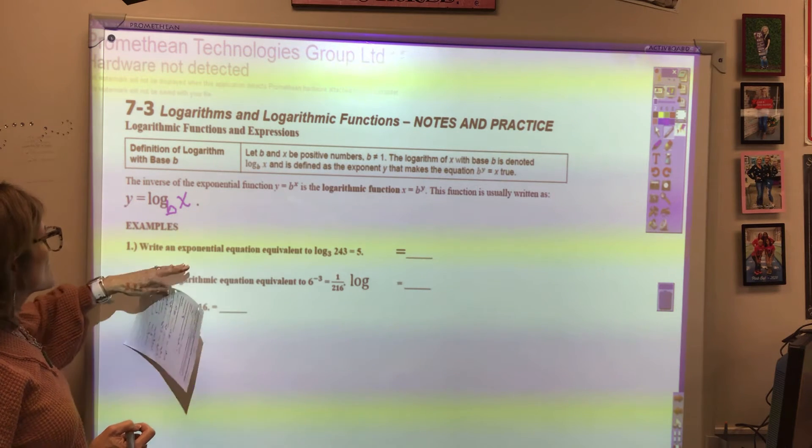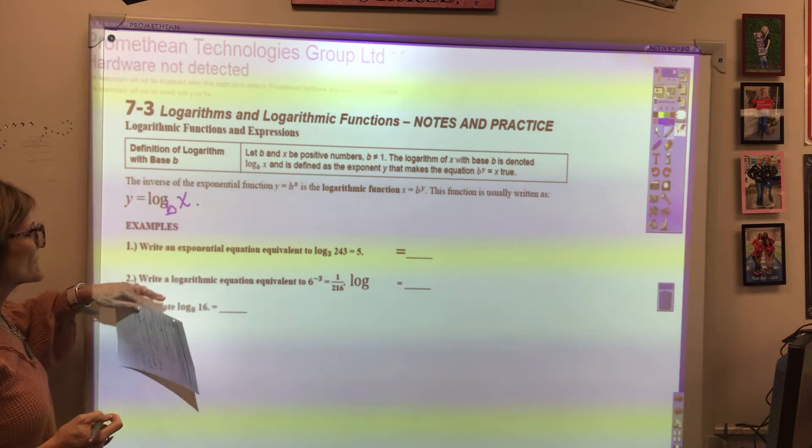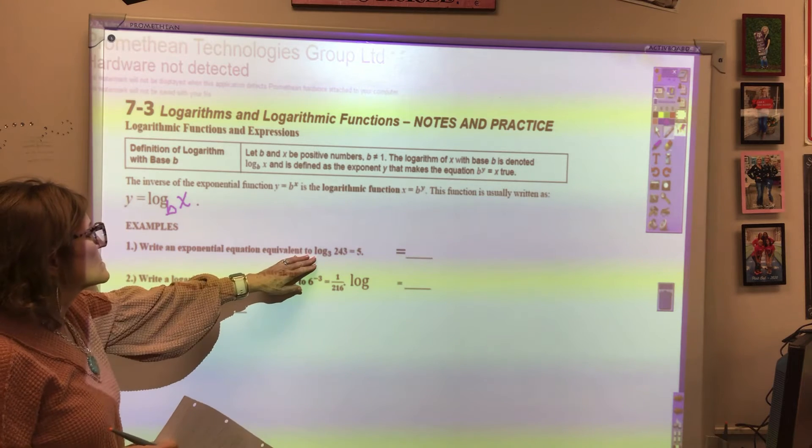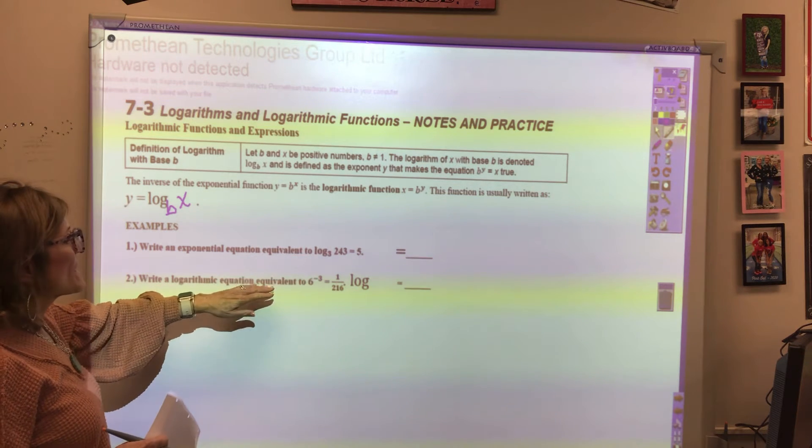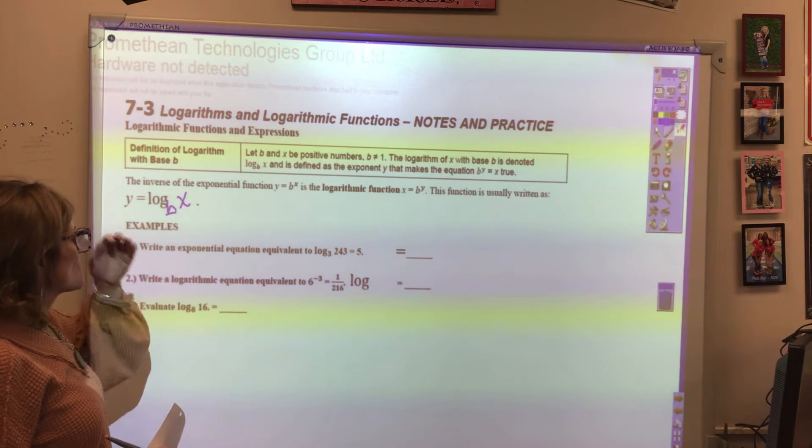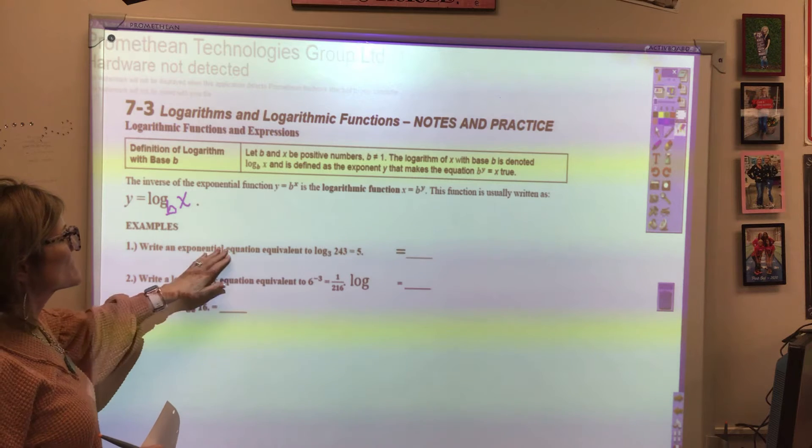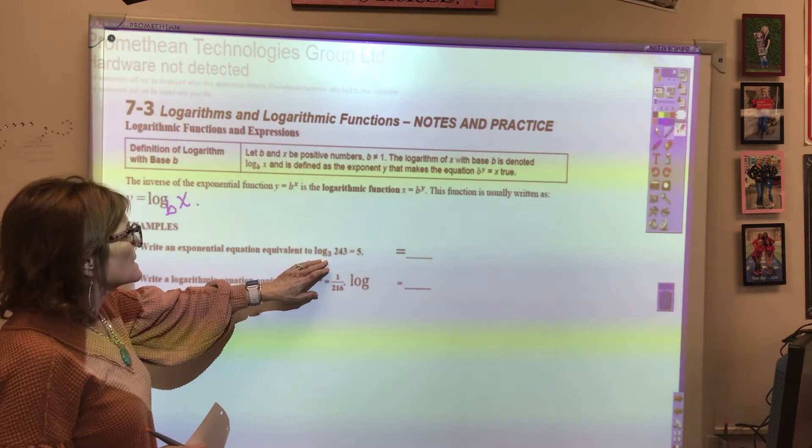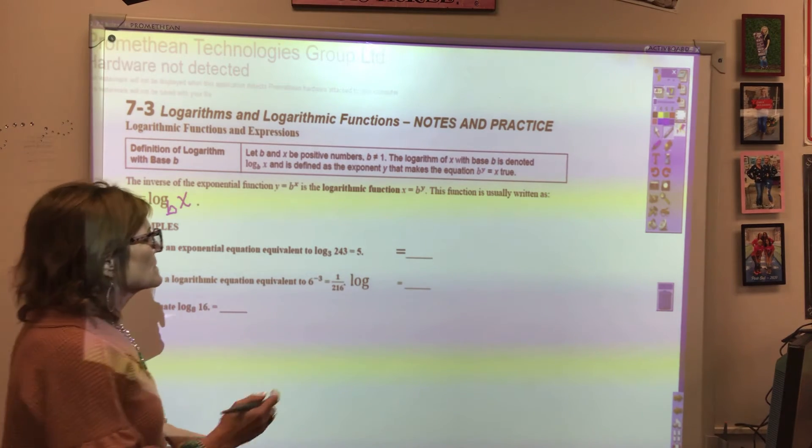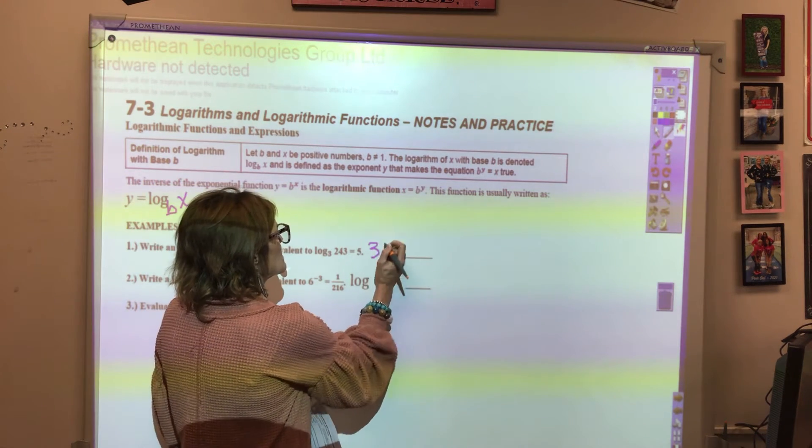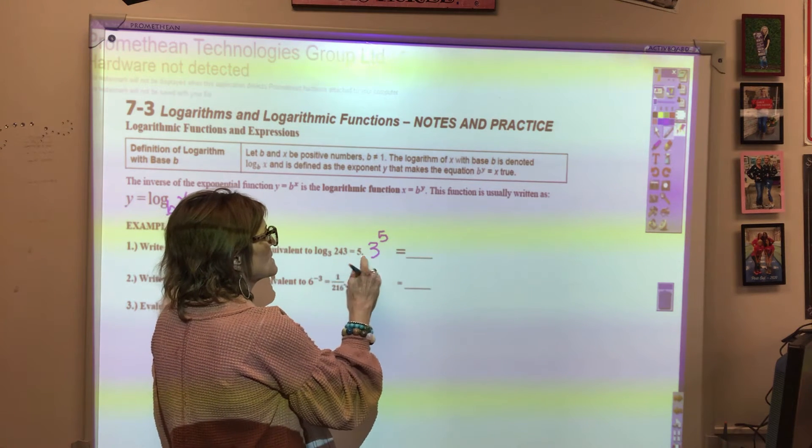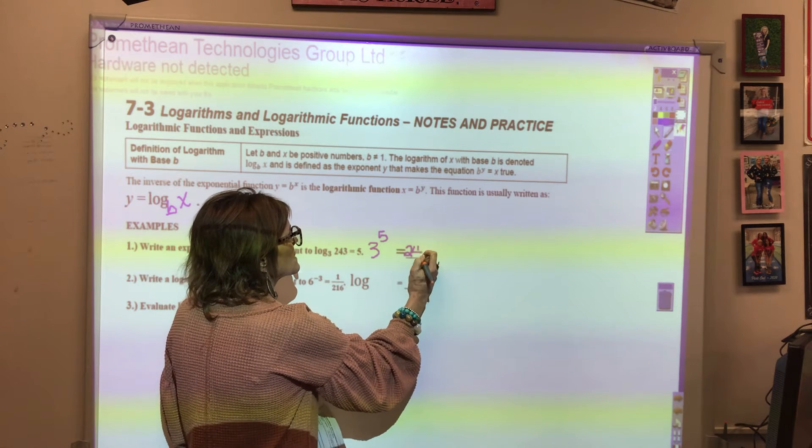So the first two examples and what we're going to practice today are converting from log form to exponential form, and from exponential form to logarithmic form. So the way you convert this, you read it as log base 3 of 243 equals 5. To convert that to an exponent, you write 3 raised to the 5th, so 3 raised to the 5th equals 243.